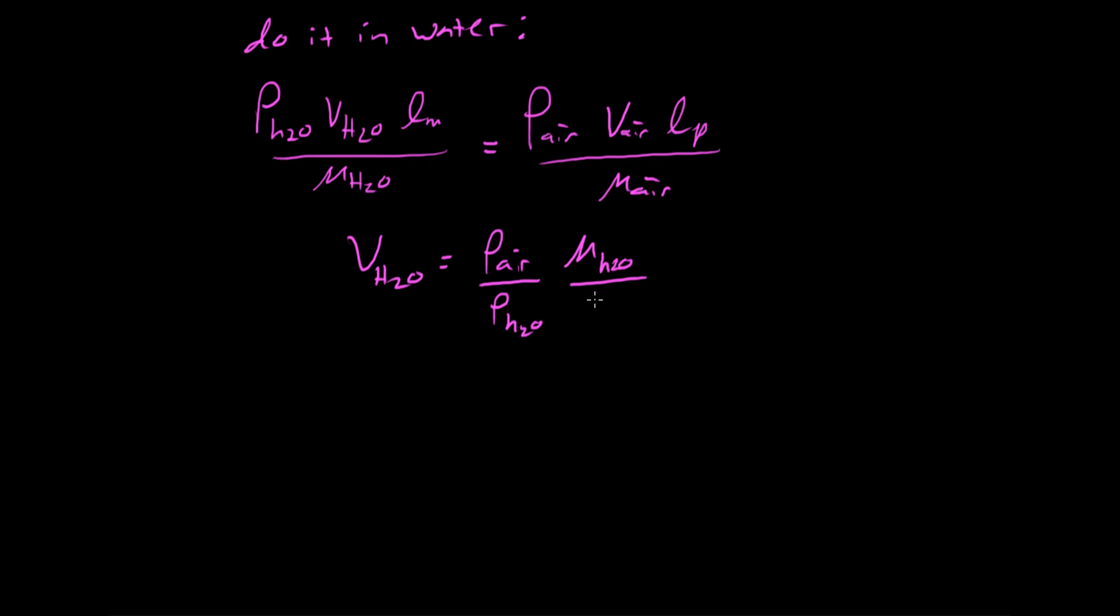So what are we going to do about that? Well, a common thing is to change materials. So for example, if we were to do this in water instead: density of the water, velocity in the water, length of the model divided by viscosity of water—that's equal to density of air, velocity of the air, length of the prototype divided by viscosity of the air. And so when I solve this, the velocity in the water is equal to ρ_air over ρ_H2O, μ_H2O over μ_air, length of the prototype over length of the model, times the velocity that we would do it in air.